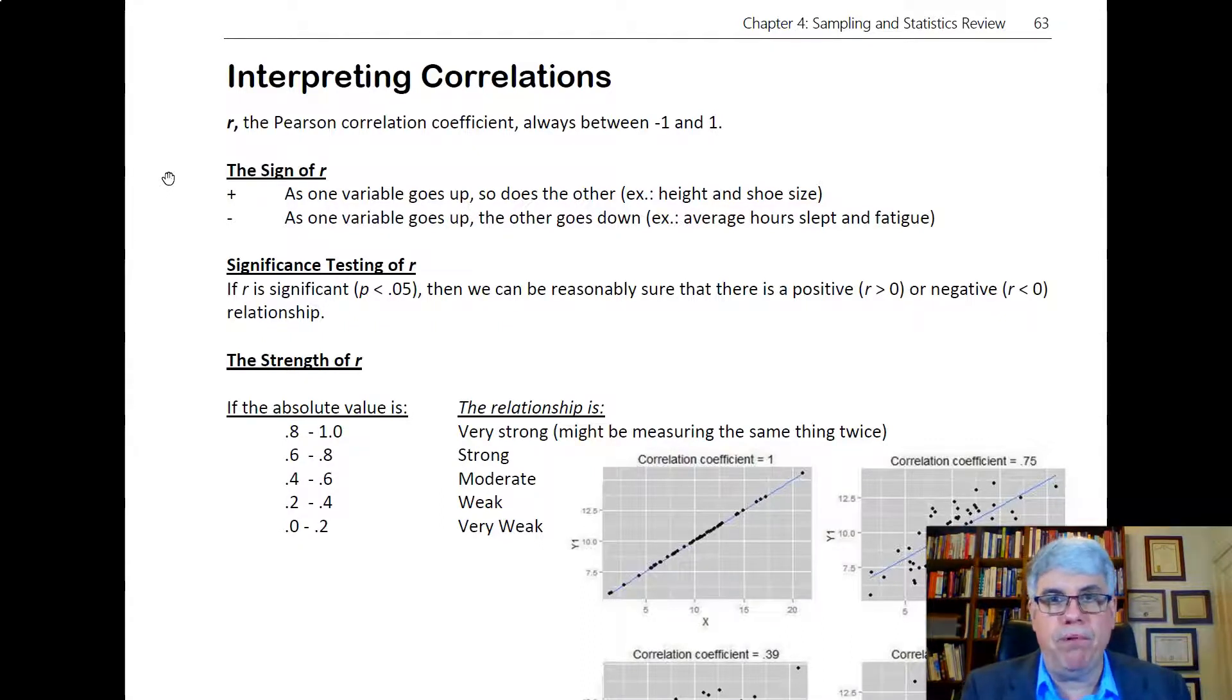Similarly, if we tested a correlation and we got minus 0.4 and it was significant, then I could be sure that in the population, if we tested everybody, the correlation would be negative. It might be only minus 0.1, it might be minus 0.4 like we measured in the sample, or it might be minus 0.5, but I can be pretty sure that it's significant.